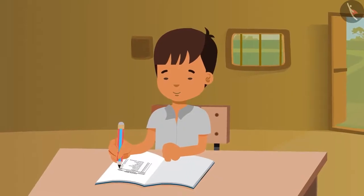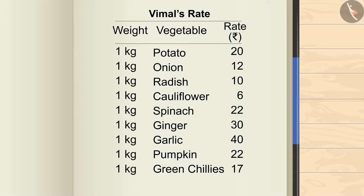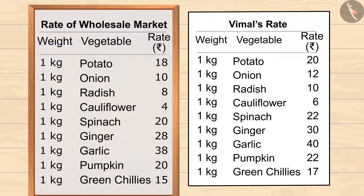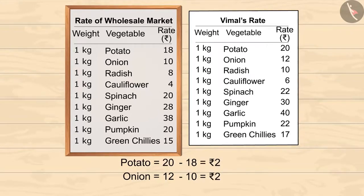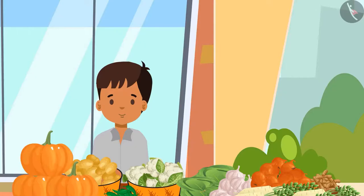After returning home, Vimal prepared a new price list. Kids, can you tell the difference between the two lists? You can pause the video to find out the difference — for example, look at the prices of potato and onion. Vimal has increased the prices of all the vegetables by two rupees. This extra money is Vimal's daily earnings.